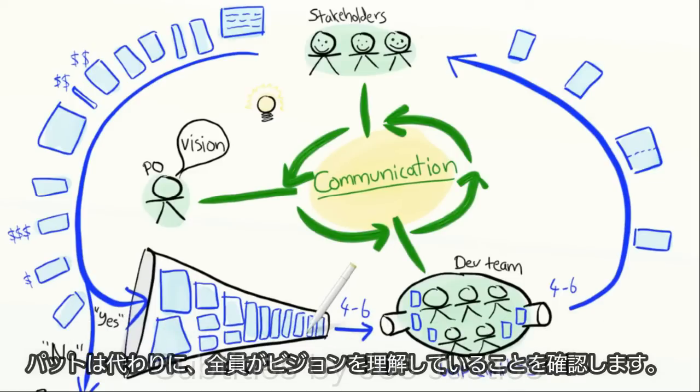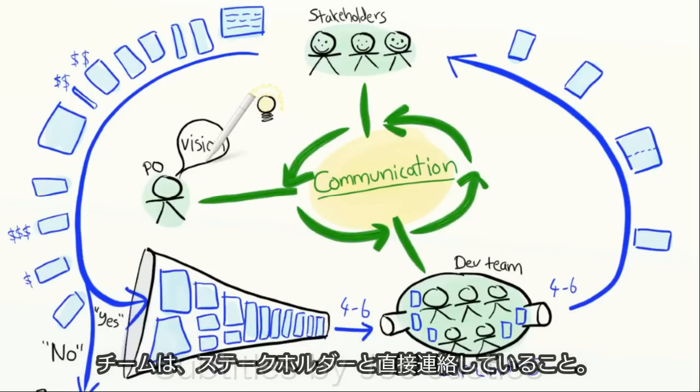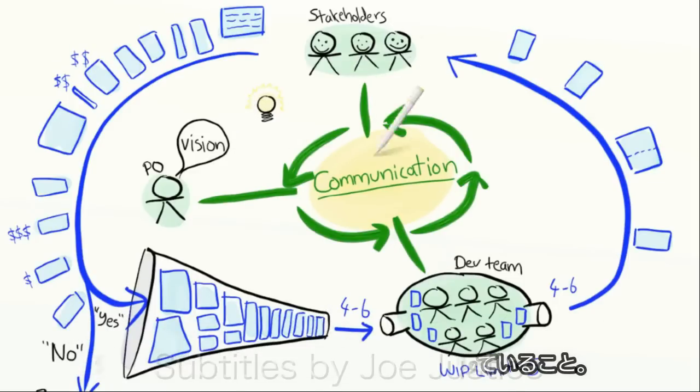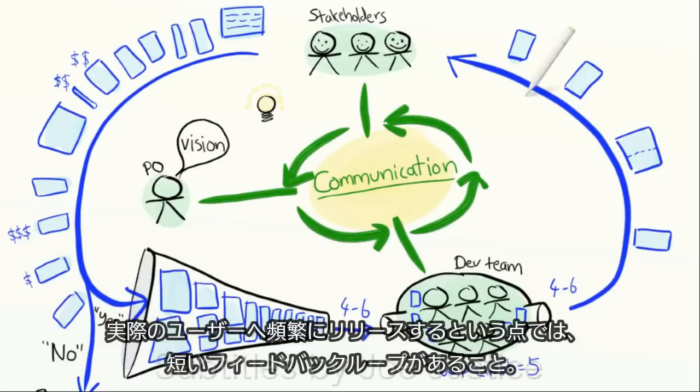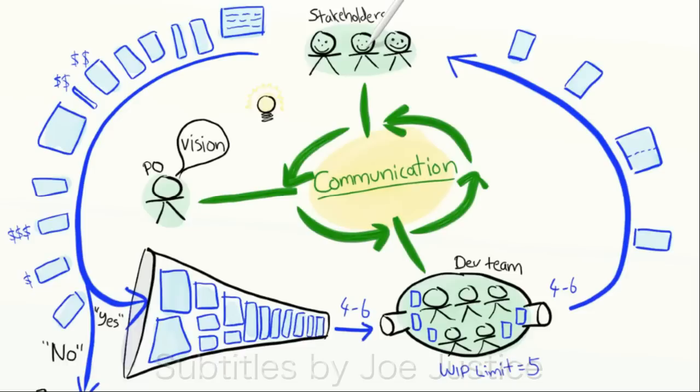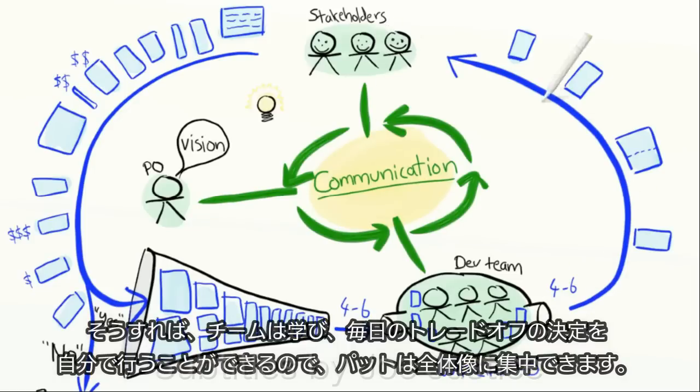Pat instead makes sure everybody understands the vision, that the team is in direct contact with stakeholders, and that there is a short feedback loop in terms of frequent deliveries to real users. That way the team learns and can make daily trade-off decisions on their own, so Pat can focus on the big picture.